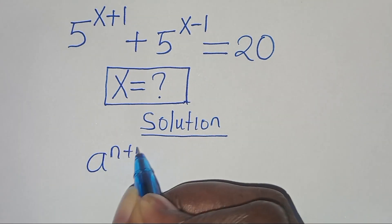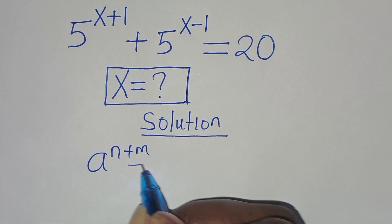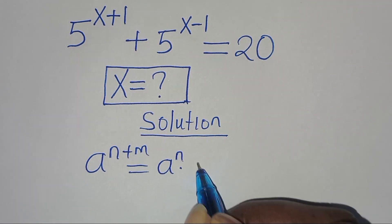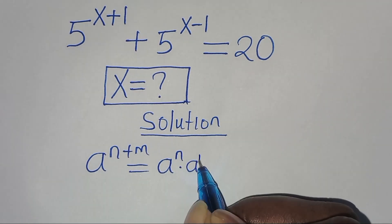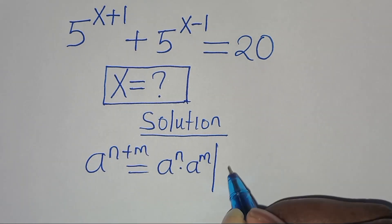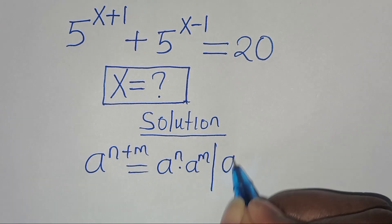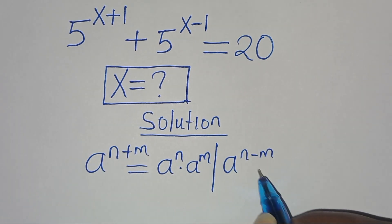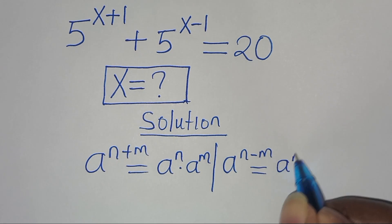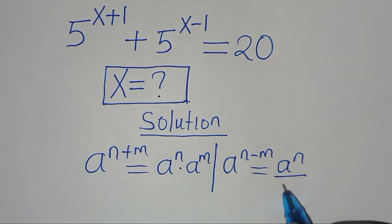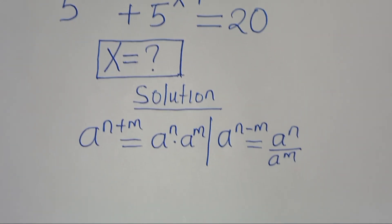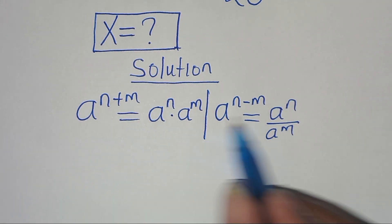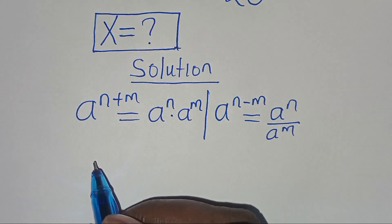We can express a to the power of n plus m as a to the power of n multiplied by a to the power of m. It's also in the form of a to the power of n subtract m, which we can express as a to the power of n divided by a to the power of m. Applying these exponent properties, we have that: